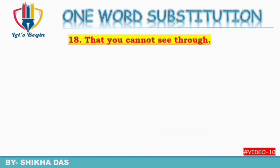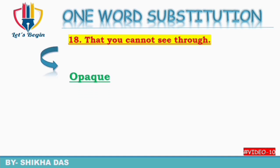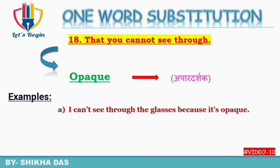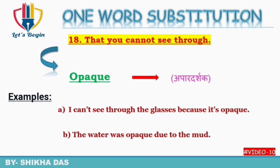Question number 18: that you can't see through — jiske aaar paar nahi dekha ja sakta. Isko kaha jata hai 'opaque'. Hindi mein kehte hain 'aparadarshak'. Examples: 'I can't see through the glasses because it is opaque.' 'The water was opaque due to the mud.' So opaque means aparadarshak — which you cannot see through.